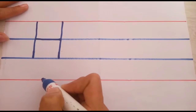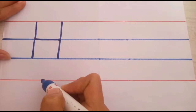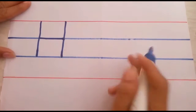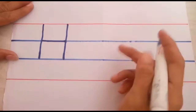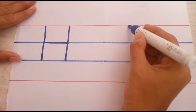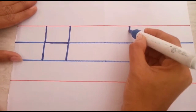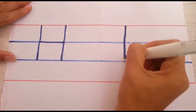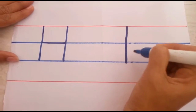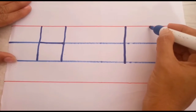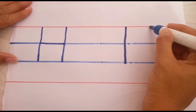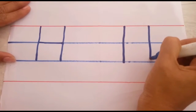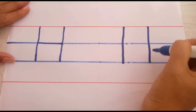Which letter is it? H! Shall we write once again? One standing line, children. One standing line. Red line to third blue line. One more standing line, children. One more standing line. Red line to third blue line, children. Third blue line.